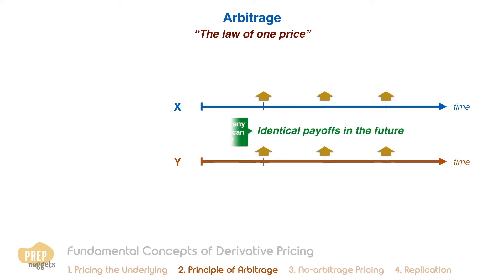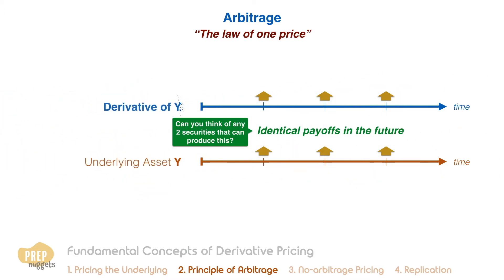Can you think of any two securities that would produce identical payoffs in the future? You may be hard-pressed to think of any. In markets for traditional securities, we don't often encounter two assets that have identical future payoffs, even for very similar companies in the same industry. The picture changes, however, if we introduce derivatives.